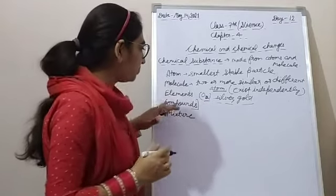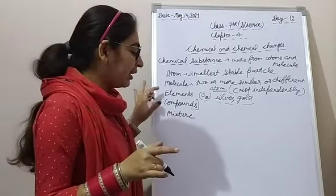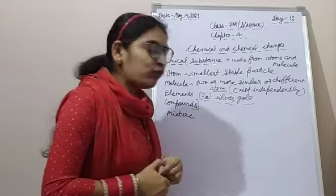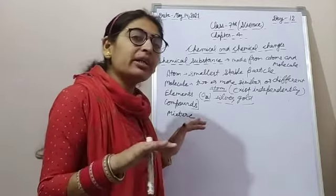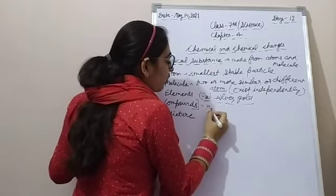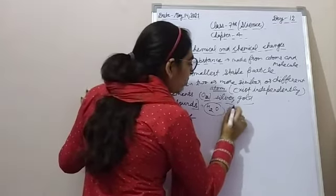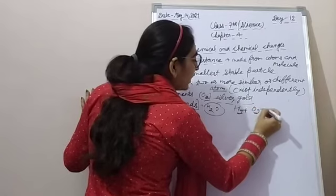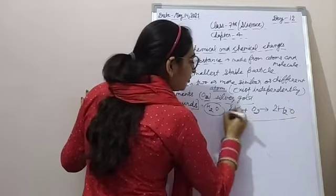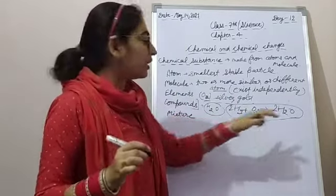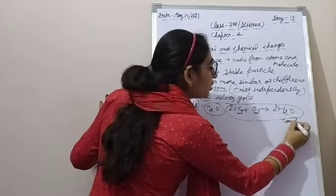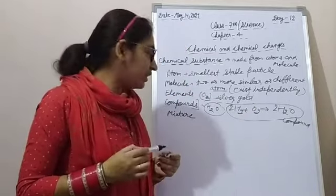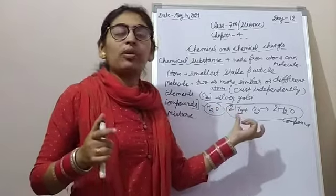Next we move on to compound. Element me single similar type ki atom hoti hai, lekin compound me kya hoga? A pure substance that is formed when two or more elements combine. Yeh bhi pure substance hai. Compound me two or more elements combine karenge — jaisa water, H2O. Hydrogen aur oxygen ne combine kiya aur water form hua. Water kya hai? Compound. Lekin hydrogen and oxygen kya hain? Elements.